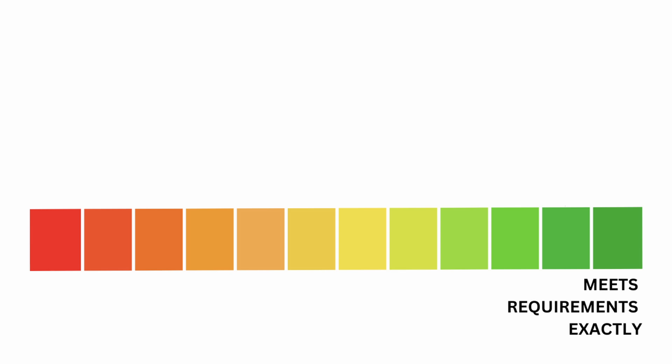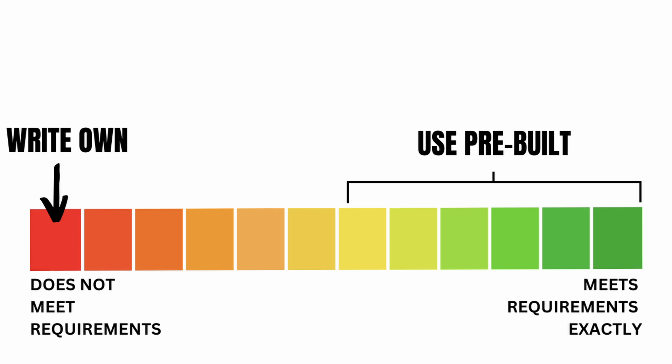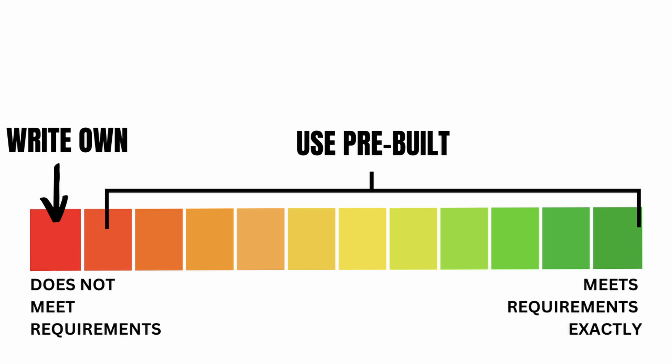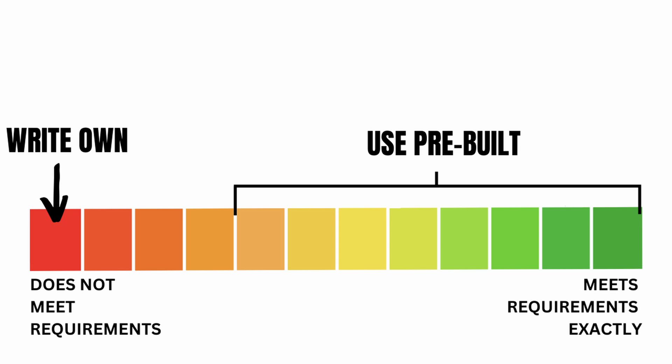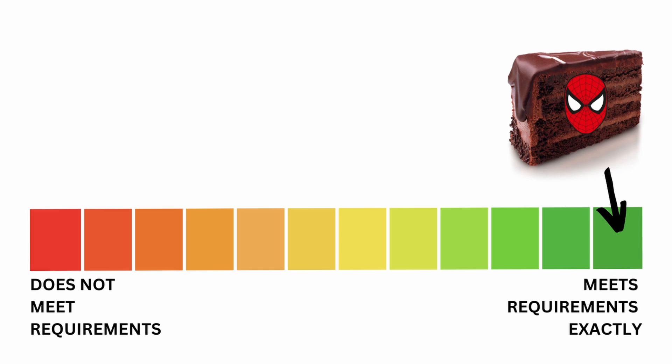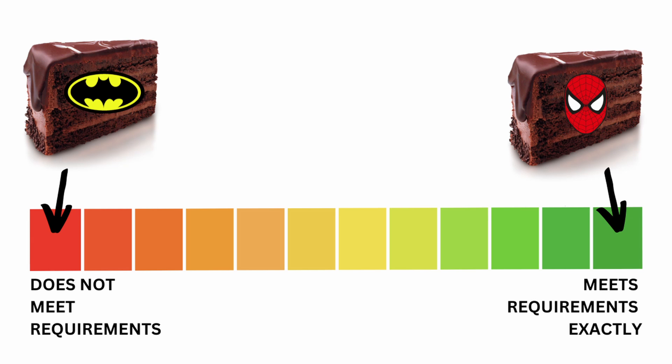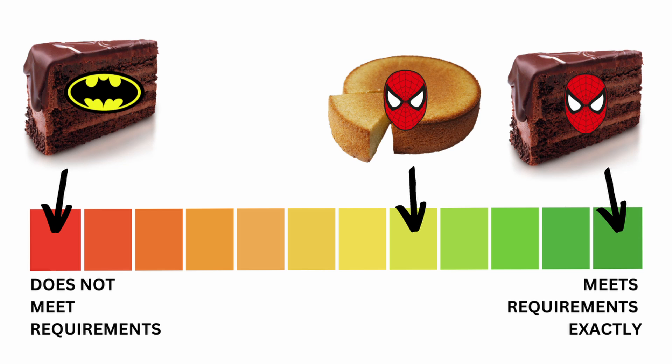On one end of the spectrum it fits your requirement exactly, and on the other end it doesn't fit it at all and is completely unusable. The bar at which you're willing to accept will generally move depending on your exact needs for your project. In my situation, I was unwilling to upset my nephew and get him a Batman cake. I thought he would have been more okay with a sponge cake instead of a chocolate cake. In software it works a similar way — sometimes you can speak to your superior or to the customer and convince them to not get the full functionality, and say we can't give you this exact thing, but maybe we can do this for you instead.